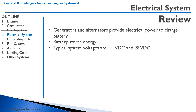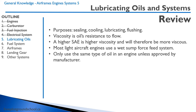Generators and alternators provide electrical energy to charge the battery. The battery stores the energy. Typical electrical system voltages are 14 volts and 28 volts in aircraft. The purposes of lubricating oil are sealing, cooling, lubricating, and flushing. Viscosity is the oil's resistance to flow. A higher SAE number means higher viscosity and therefore more resistance to flow. Most light aircraft engines use a wet sump force feed system, and you can only use the same type of oil in an engine unless approved by the manufacturer.